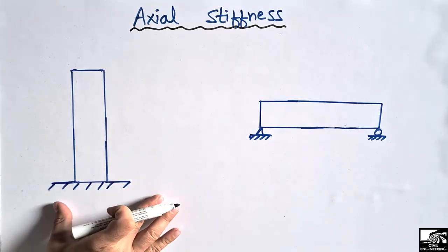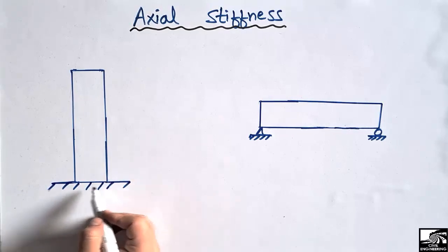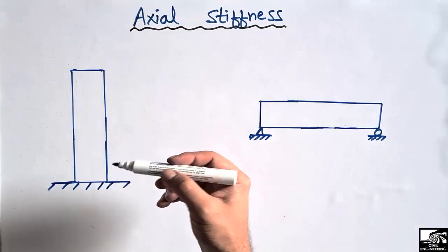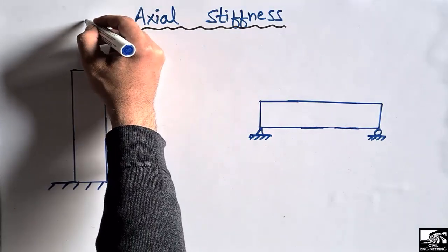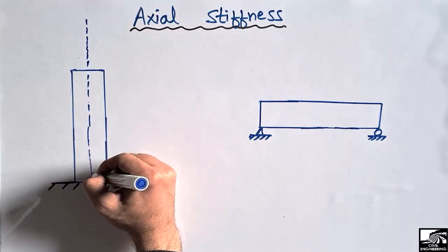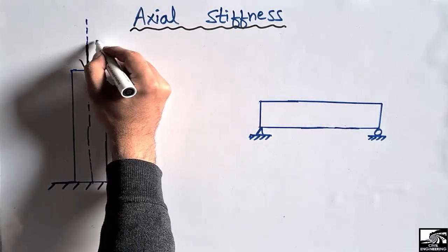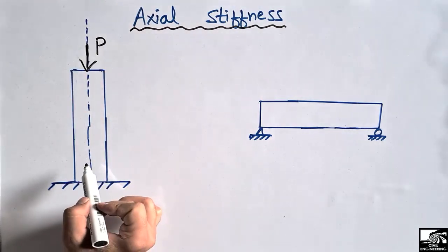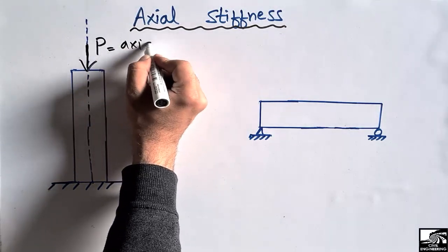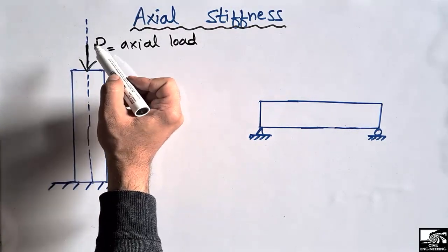On the left side we can see a reinforced concrete column — a fixed-ended column — while on the right side we have a simply supported beam. This is the axis of the column, and there is a concentrated load of magnitude P acting along the axis of the column. A load which acts along the axis is known as the axial load.